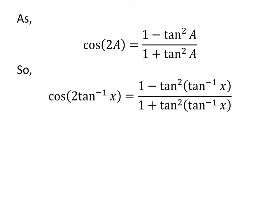So, cosine of 2 times arc tangent of x is equal to 1 minus square of tangent of arc tangent of x over 1 plus square of tangent of arc tangent of x.